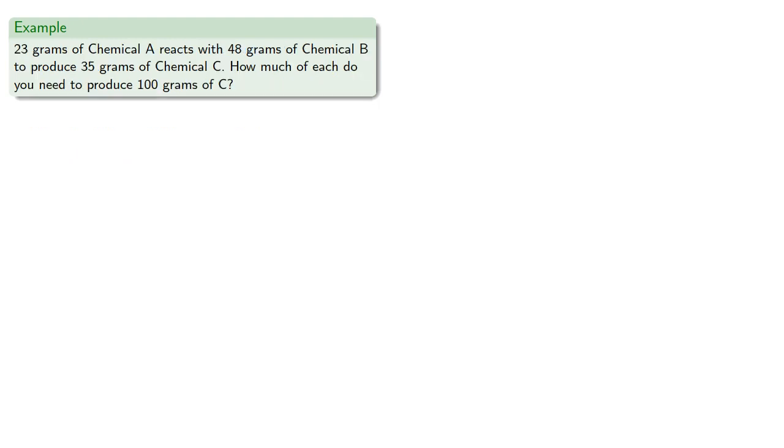Suppose 23 g of chemical A reacts with 48 g of chemical B to produce 35 g of chemical C. How much of each do you need to produce 100 g of C?